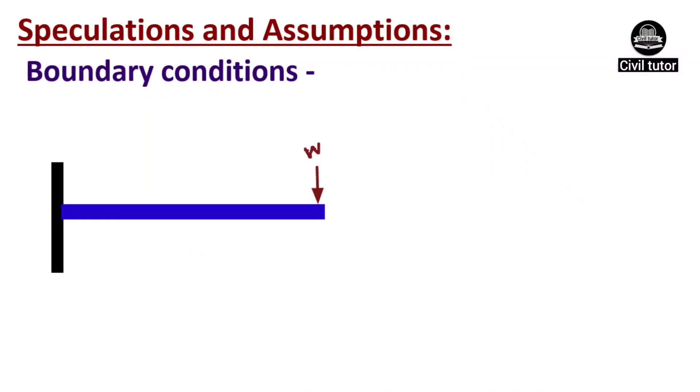If we apply some load W in the vertical direction, it will tend to deflect the free end in the downward direction without showing any resistance against the vertical load due to the absence of any support.